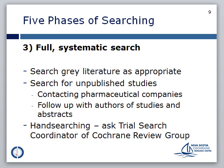During the full systematic search, you will search any grey literature sources you have determined would be appropriate. You may also need to check for unpublished or ongoing studies by contacting drug companies or following up with authors and experts. In addition, you may want to manually search certain journals to check for unindexed references to relevant studies. You can check with the trial search coordinator from the related Cochrane Review Group to see which journals should be searched.